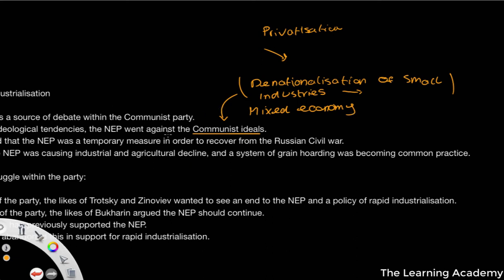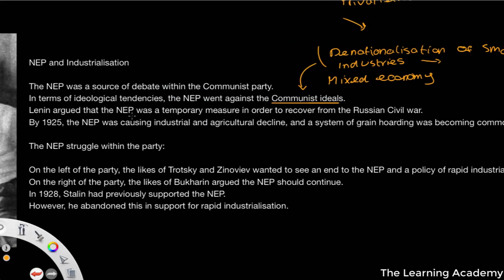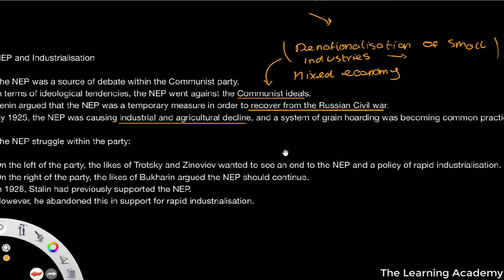Now this mixed economy — unless you want to argue that the United Kingdom is a socialist state — doesn't really go in favor of the communist ideals that we are talking about. So therefore there was a lot of challenge to the NEP. Lenin argued that the NEP was just a temporary measure to recover from the Russian Civil War. Don't forget they went through World War One and the Russian Civil War. And by 1925, the NEP was causing industrial and agricultural decline.